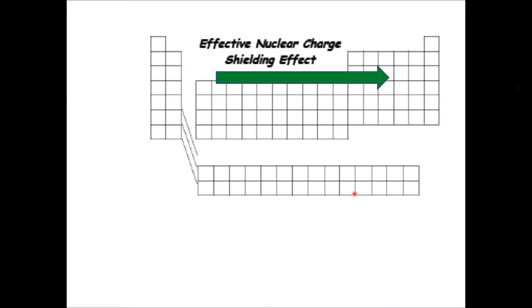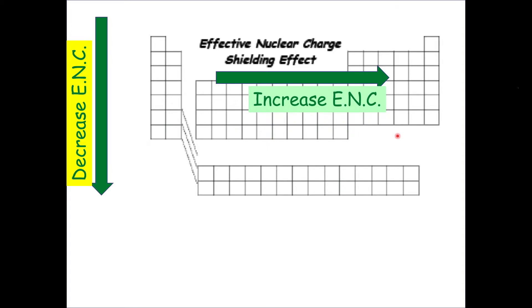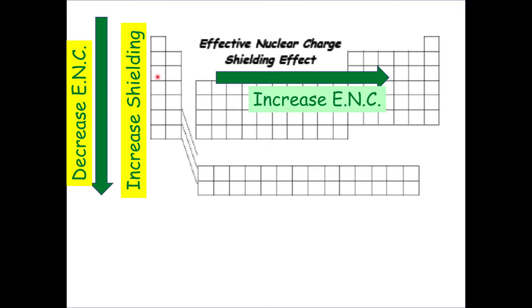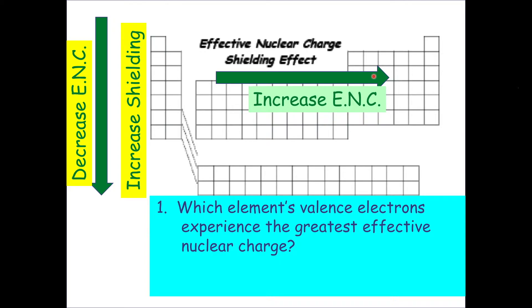On the periodic table, the effect of nuclear charge increases from left to right, and from top to bottom it will actually decrease, because of the shielding effect. Going left to right, there is no change in shielding because all elements in the same row have the same number of core electrons — you're not adding a full row of seats, going back to that rock concert analogy.